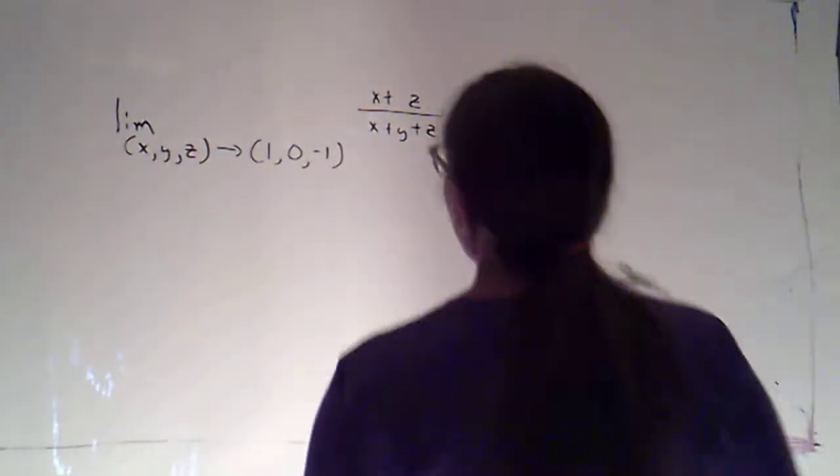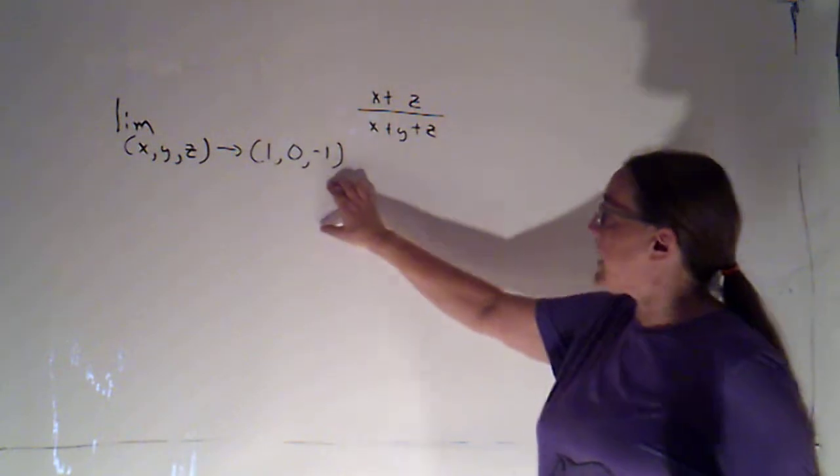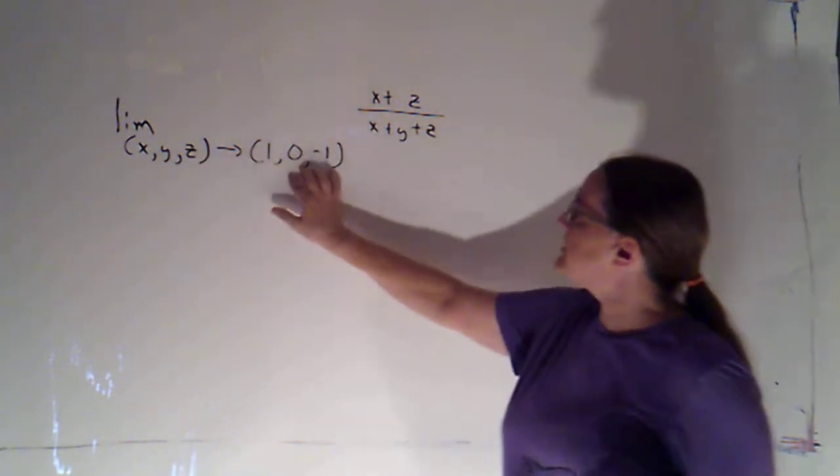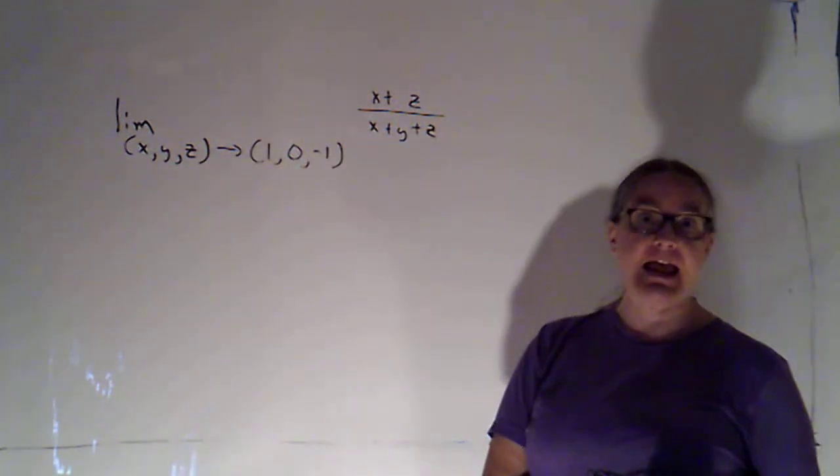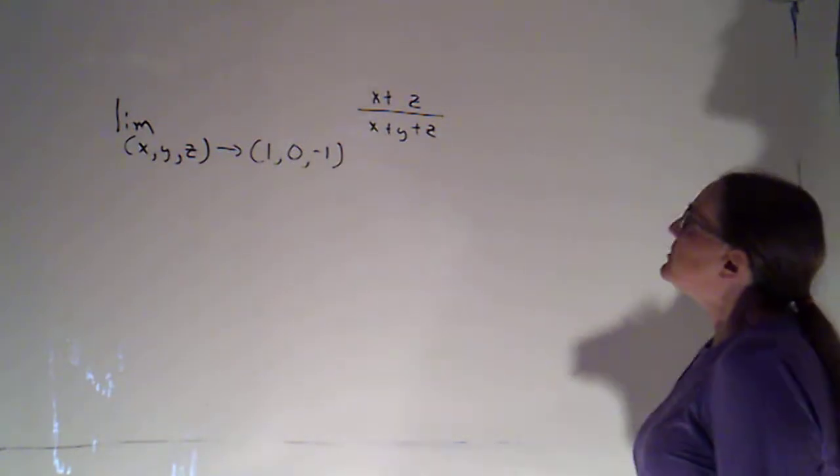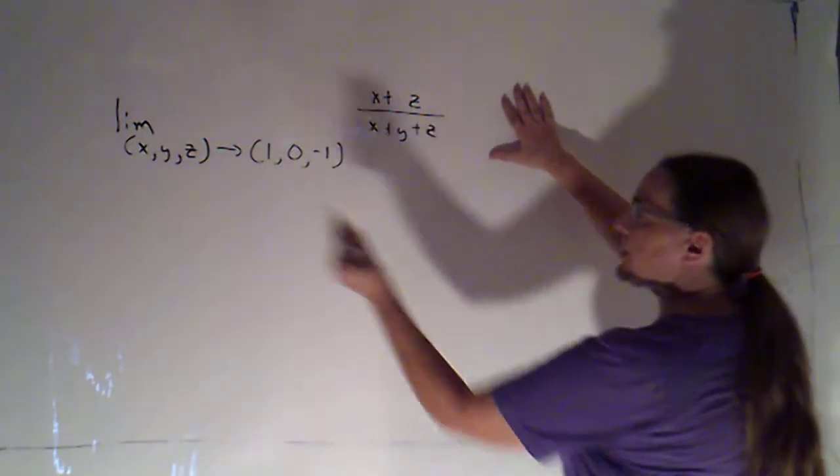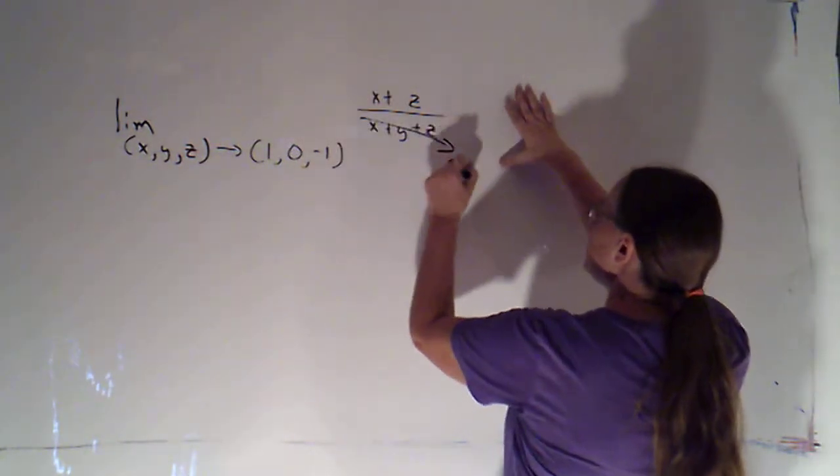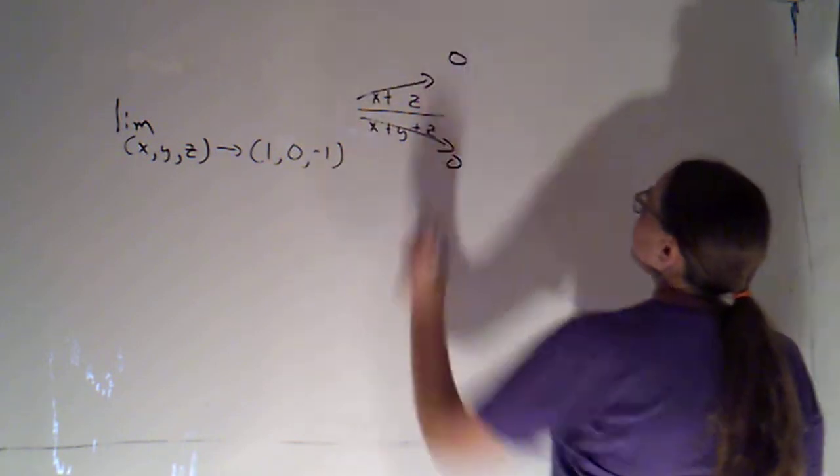I've got another problem up here on the board. This time we're in 3-space. Our point (x, y, z) is approaching (1, 0, -1). If I tried to plug in, the denominator's going to 0, and so is the numerator. So I'm getting an indeterminate form.